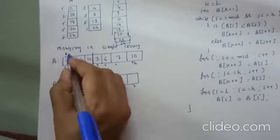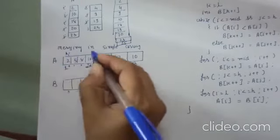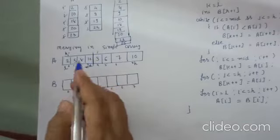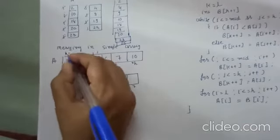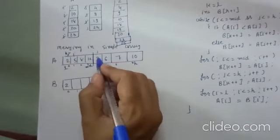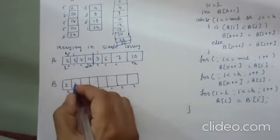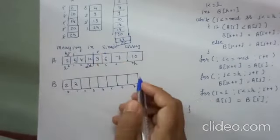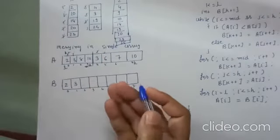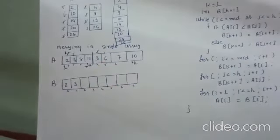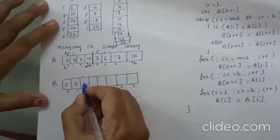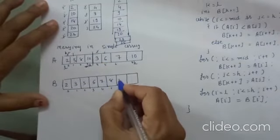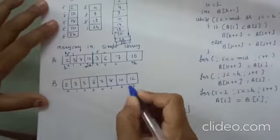I will take pointer I here and pointer J here and compare I and J. Whichever is smaller I will copy it into the auxiliary array and increment I. Again I will compare; as J is smaller, copy that and increment J. Likewise you can perform merging in a single array. The result is: 2, 3, 5, 6, 7, 8, 10, and 12.